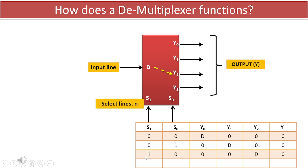When the select lines are configured as s1 equals 1 and s0 equals 0, the data D from the input is routed to the output y2. Again, the data at this output can be either in a high or low state.